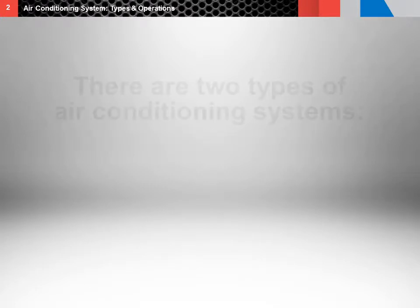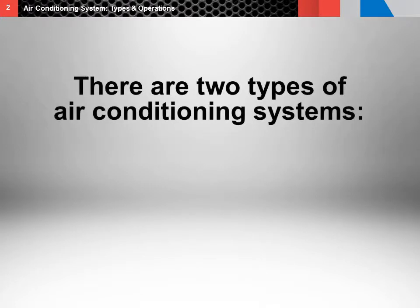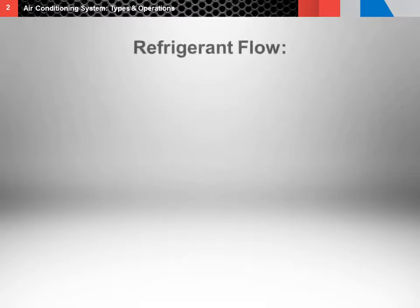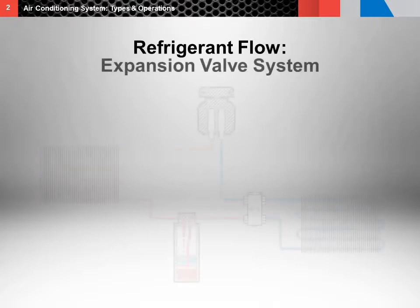There are two main types of air conditioning systems that are important to know and understand: the expansion valve system and the orifice tube system. We're going to show you how these two different systems operate with a focus on refrigerant flow. Let's start by going through refrigerant flow in expansion valve systems.